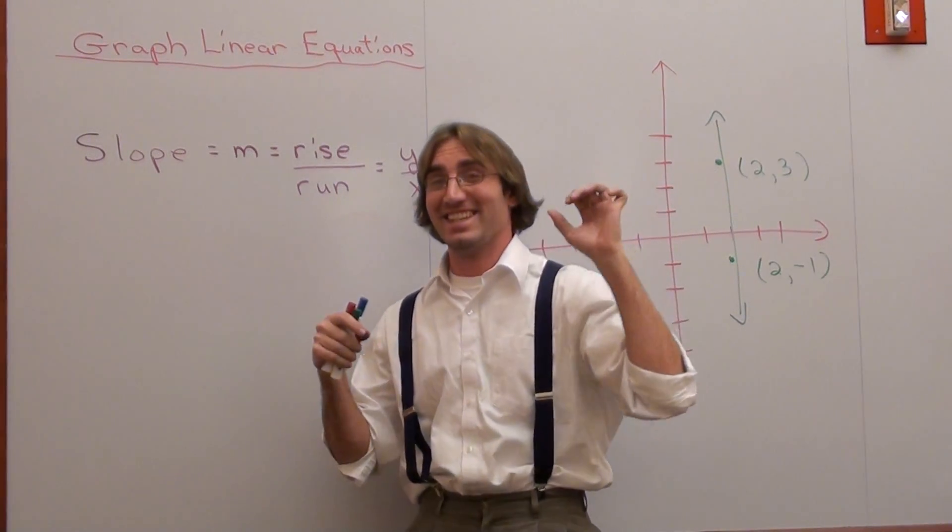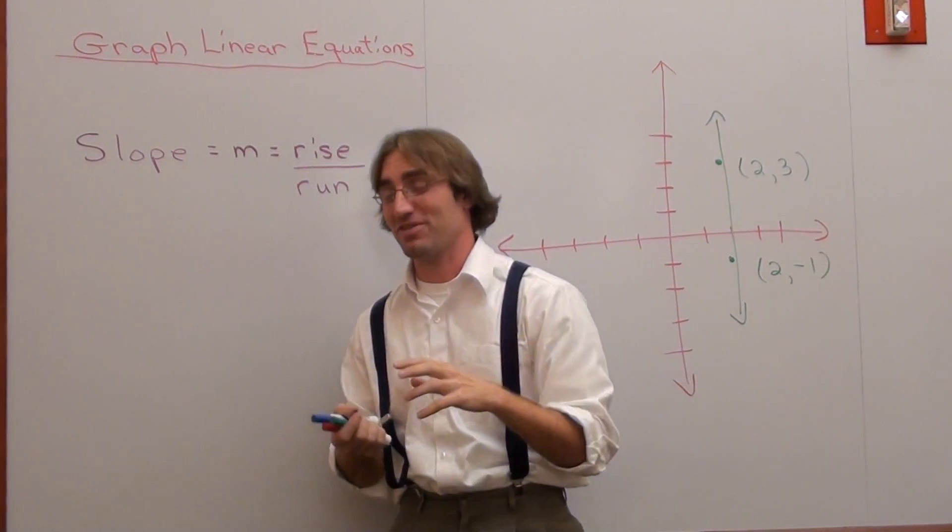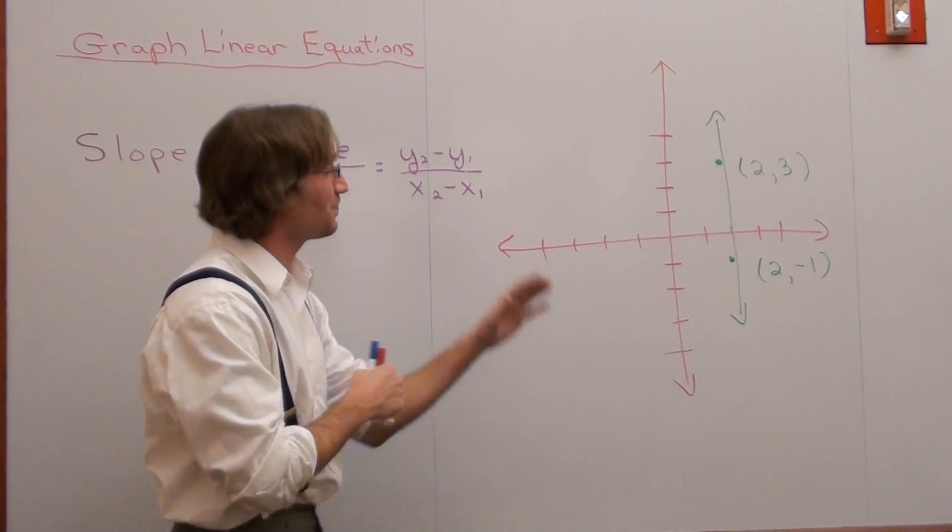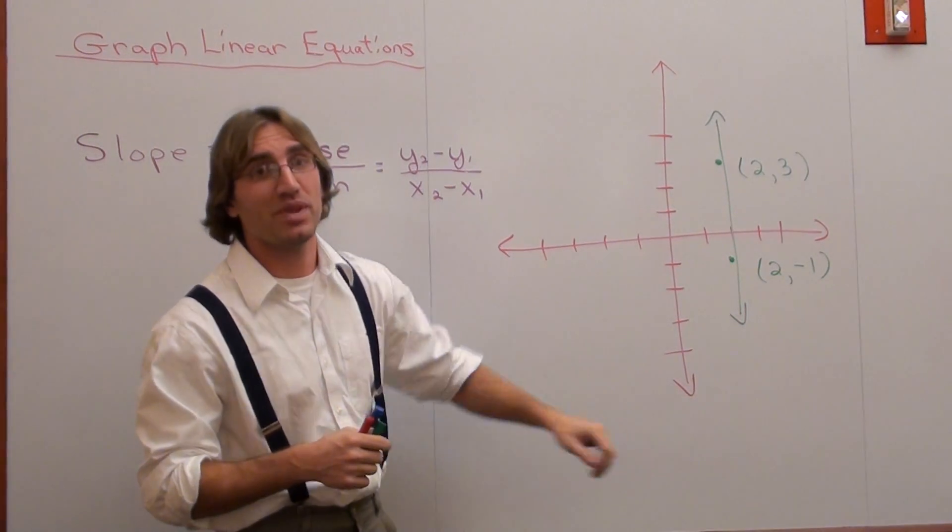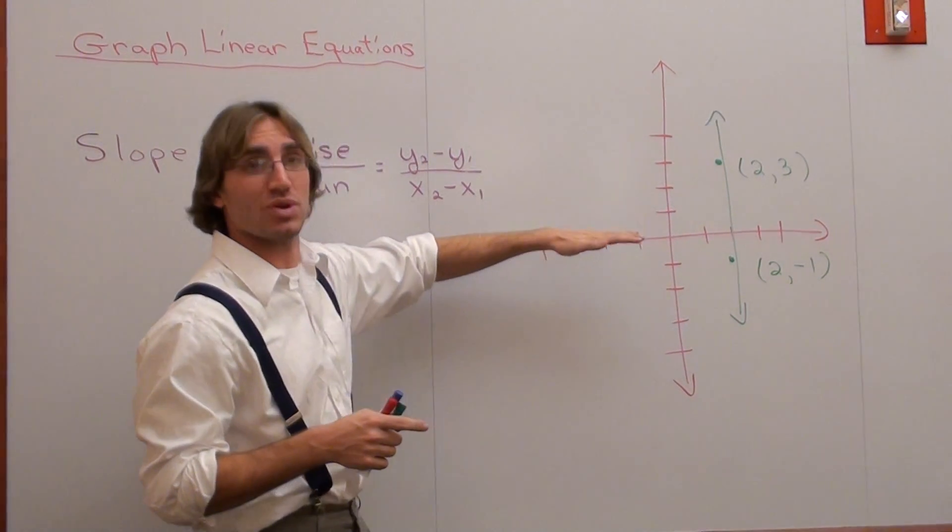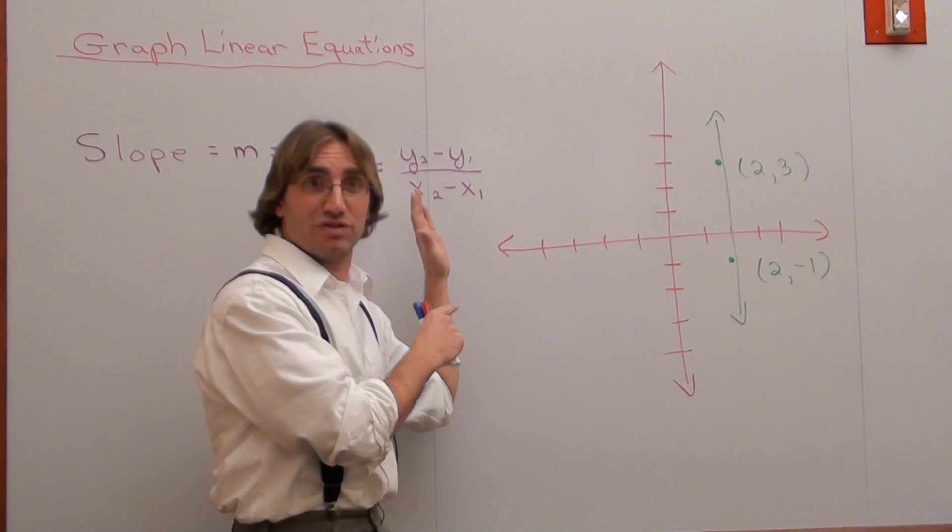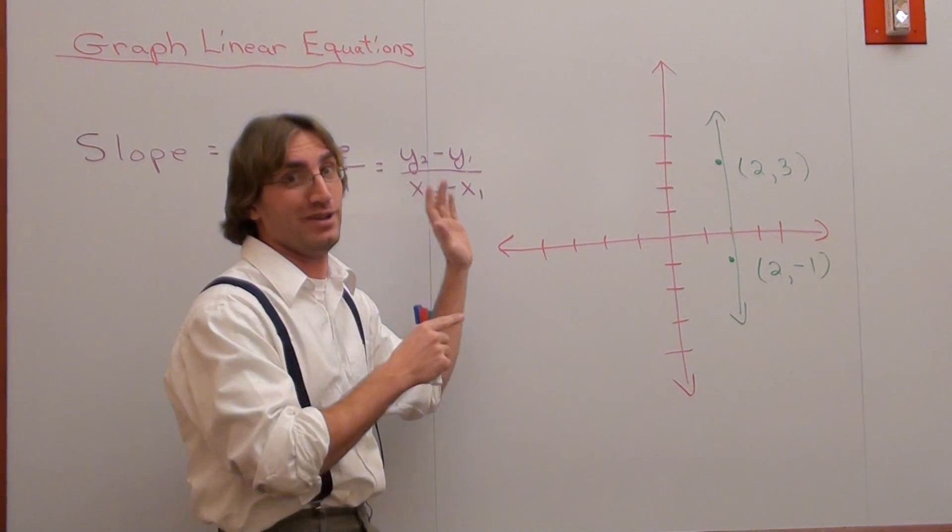All right, this is the last particular type of slope we're going to do. We did a positive, we did a negative slope, we did a zero slope which was a horizontal line, and now we're going to do a vertical slope, which is undefined.